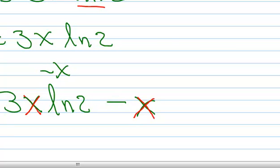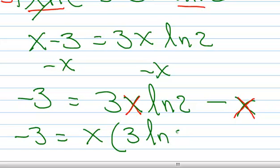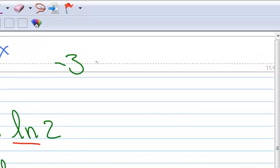The next step is to factor out an x from each of the terms on the right. Let me rewrite it up here because I'm running out of room. See how I factored an x out of there?